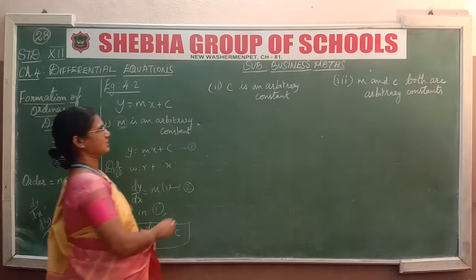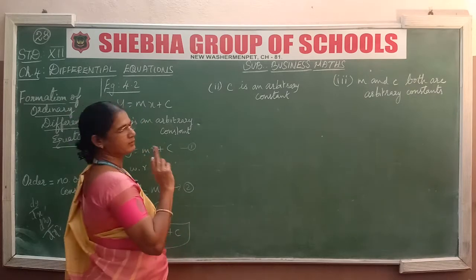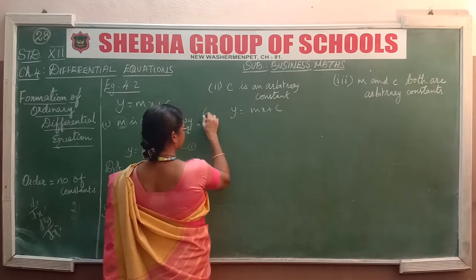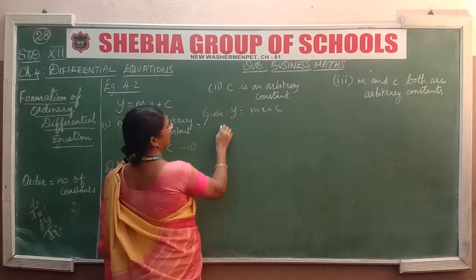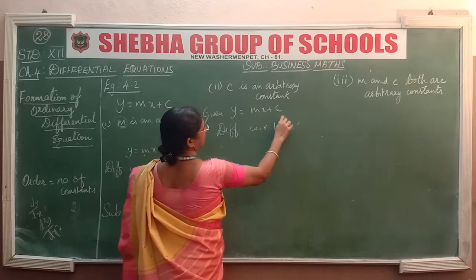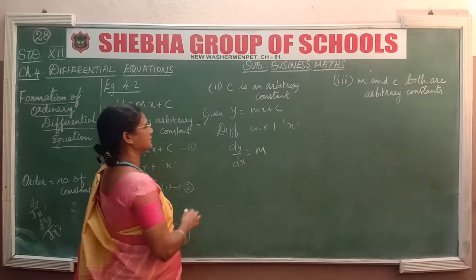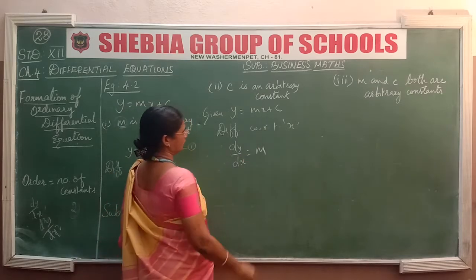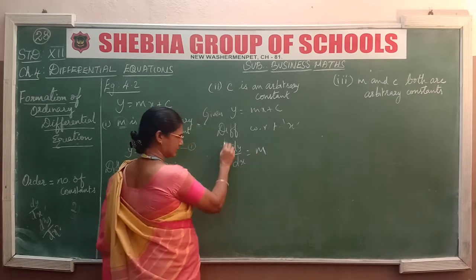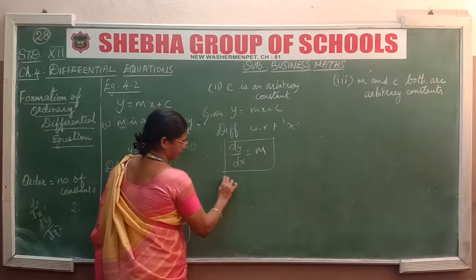The given equation is y = mx + c. Now differentiating with respect to x we get dy/dx = m × 1, and c is constant so differentiating gives 0. So here c vanishes. Therefore dy/dx = m is the required differential equation.